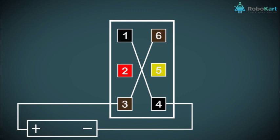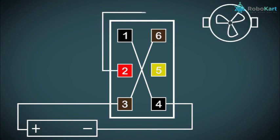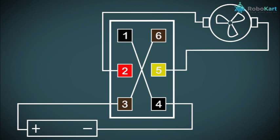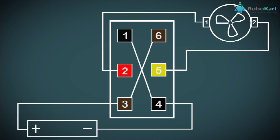We'll also connect the motor to the DPDT switch to make it easier for understanding. Since there is no polarity marking on the motor, we will number the motor terminals as Terminal 1 and Terminal 2. Terminal 1 of the motor will be connected to Terminal 2 of the DPDT switch, and Terminal 2 of the motor will be connected to Terminal 5 of the DPDT switch.